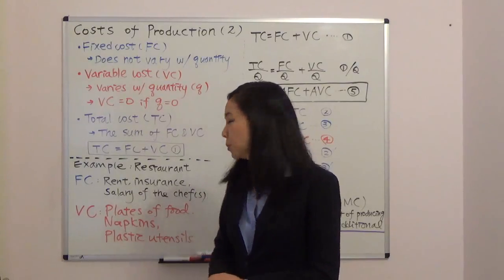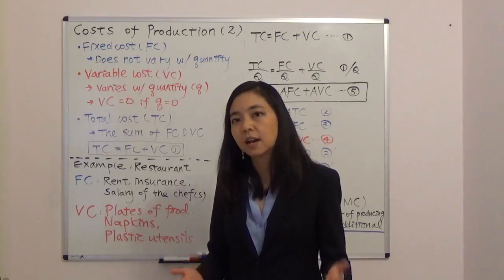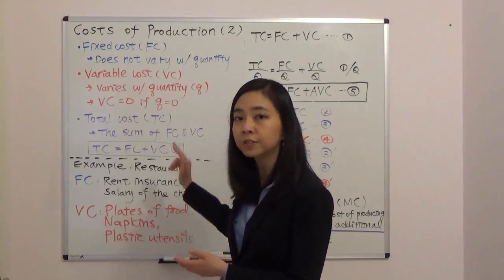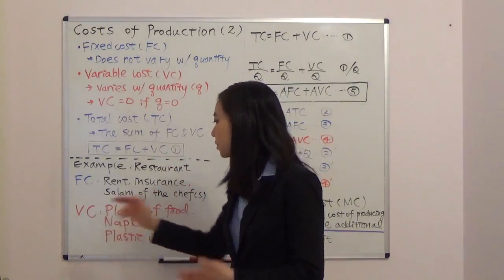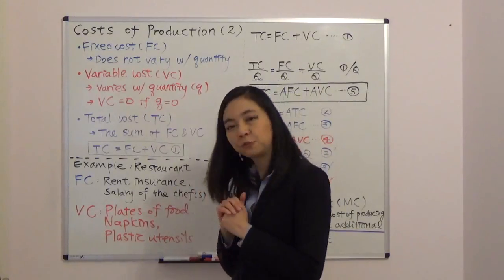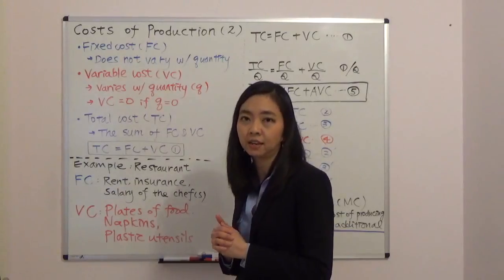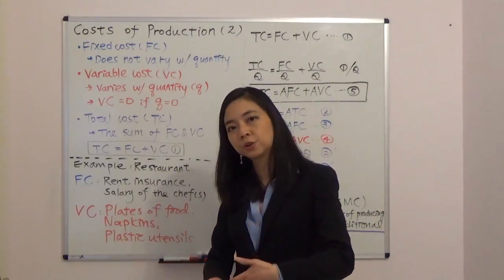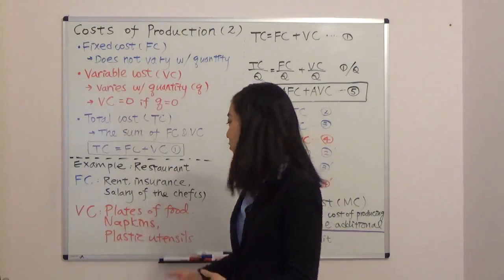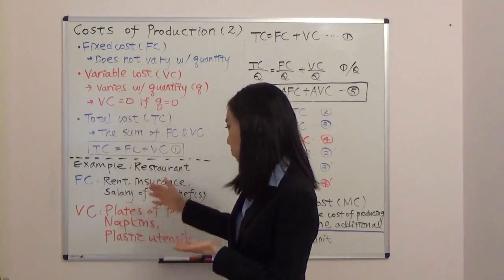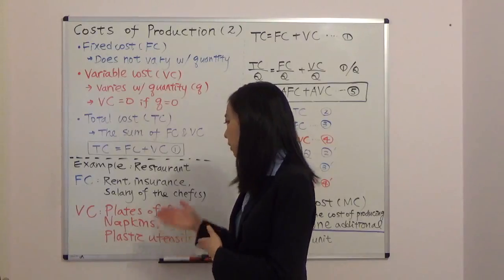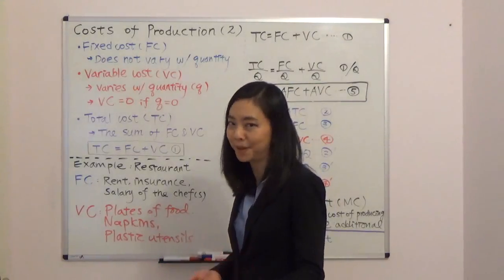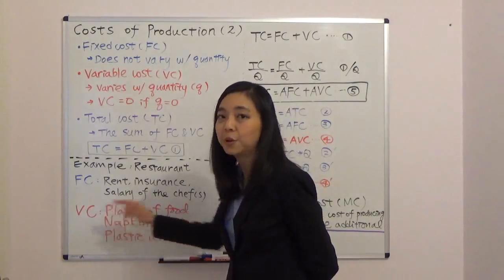What about variable cost? Variable cost will be things like ingredients. The more plates of food you sell, the more lettuce and tomatoes you have to buy, so variable cost is higher when your quantity goes up. And the more plates of food you sell, the more napkins and plastic utensils you have to provide to your customers. If you close down on Mondays and sell no food, your variable cost will be zero — you don't need to buy lettuce and tomatoes, and no one takes your napkins or utensils. So variable cost is zero when quantity is zero.